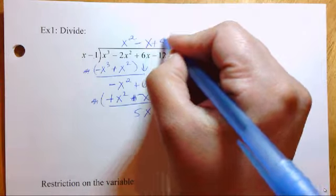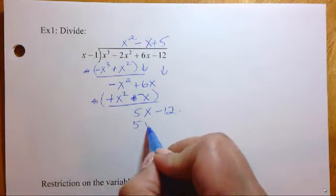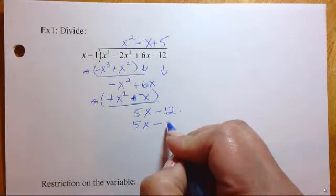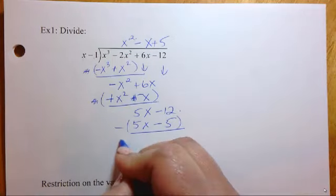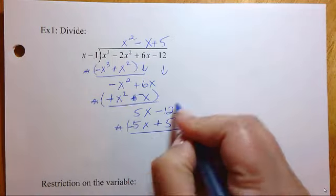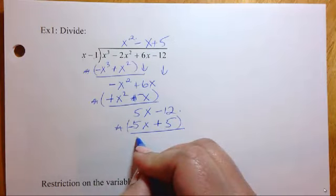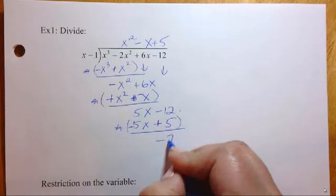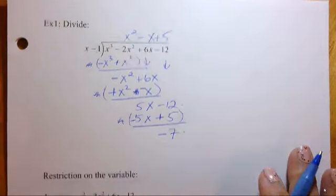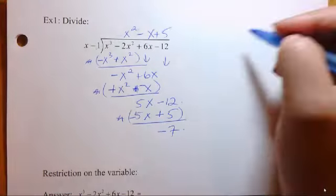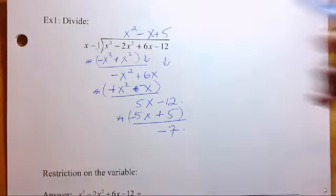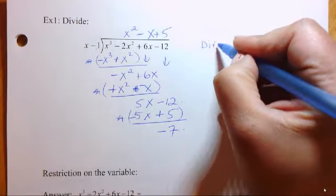And then this is going to give us a plus 5 here. 5x minus 5. And subtract down. We could change the sign. And then add. And we get 0x and negative 7. So this means that our remainder is negative 7. If you want, you could just, just for the sake of knowing,